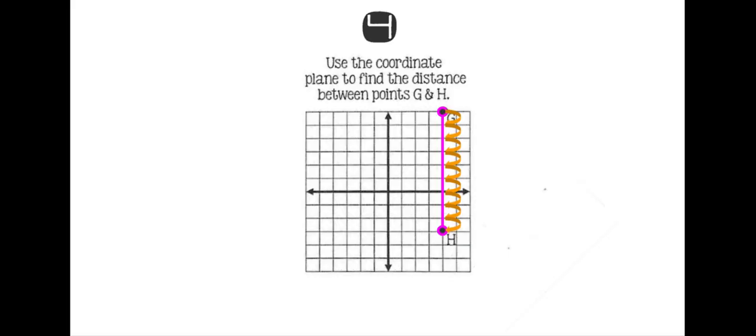If you got that G was nine units away from H, you have mastered the standard. You now know how to find the distance between two points on the coordinate plane. Congratulations.